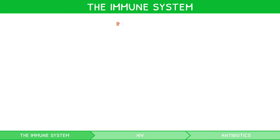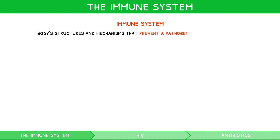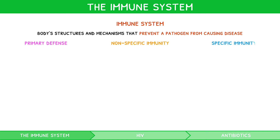The immune system is a term given to the body's structures and mechanisms that prevent a pathogen from causing disease. This is divided into three components: the primary defence, non-specific immunity, and specific immunity.